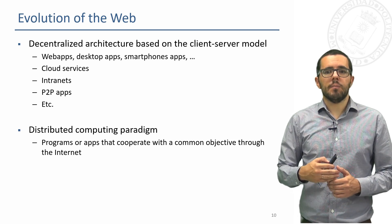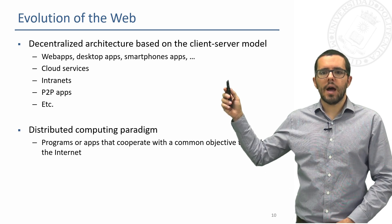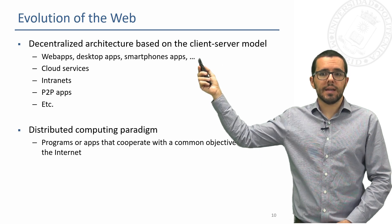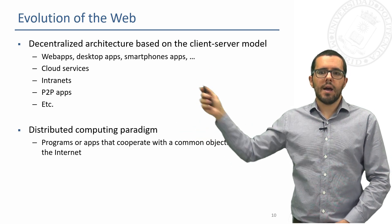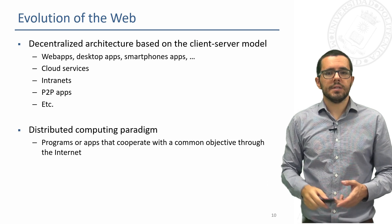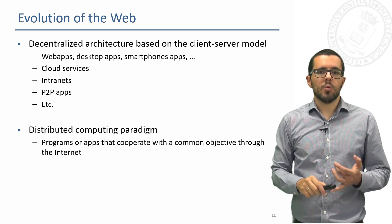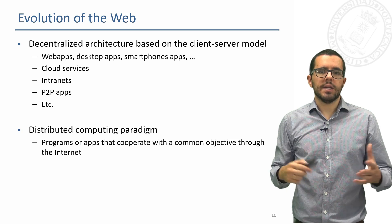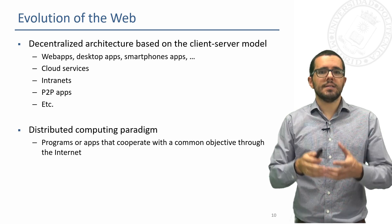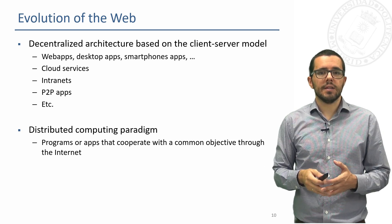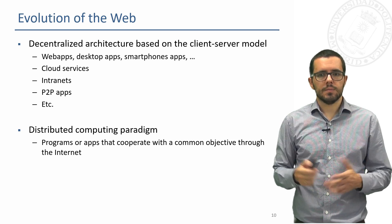From this point the web evolves a lot. We will have a decentralized architecture and a distributed paradigm. We can have cloud services, peer-to-peer applications, desktop applications, web applications, smartphone applications — many kinds of applications. We will access this internet and communicate with servers and with machines in the cloud.